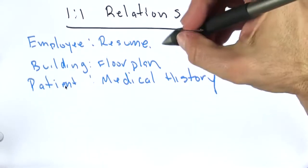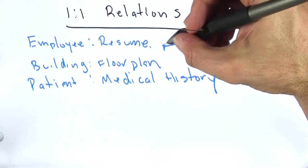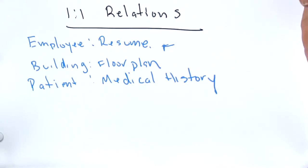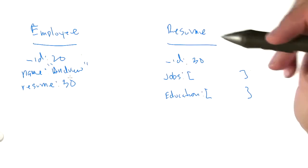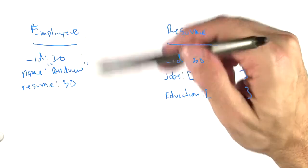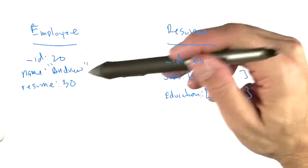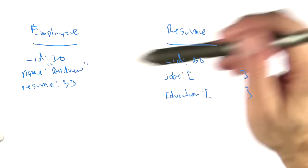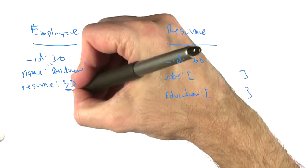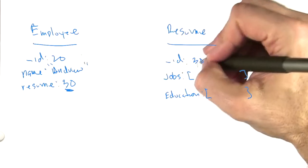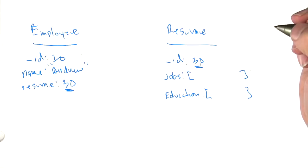Let's look at this first case, the employee resume example. We can model this in several different ways. Let's talk about that. All right, so we can model the employee-resume relation by having a collection of employees and a collection of resumes, and having the employee point to the resume through linking, where we have an ID that corresponds to an ID in the resume collection.